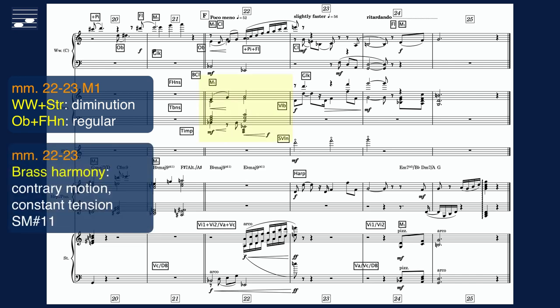The brass harmony is based on constant tension, extended major 13 chords with sharp 11 and a strong diatonic R5 root cycle from B-flat to E-flat. There's contrary opening motion that helps to create the climax effect.